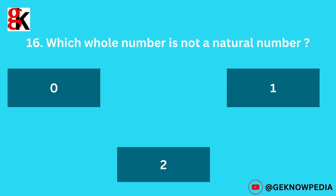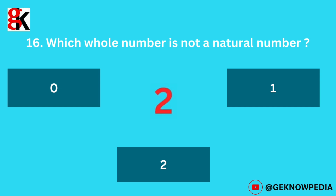Sixteenth question. Which whole number is not a natural number? Options: zero, one, two. The correct answer is 0.